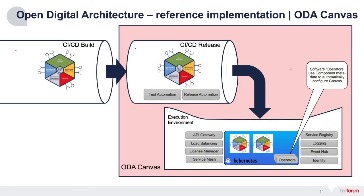Finally, I'll just describe how the authentication works. When an external consumer calls an API, the canvas will authenticate the caller, associate it with a role from the identity service, and pass the authenticated API call to the component. It's the component's responsibility to understand the permissions associated with that role and to enforce the access control policy. The idea is that identity management and the authentication process are completely offloaded to the canvas.